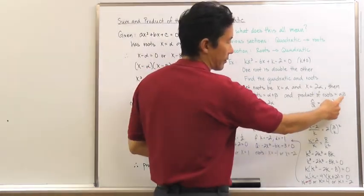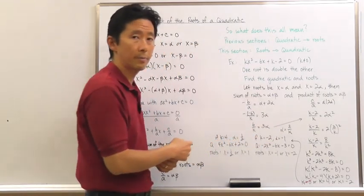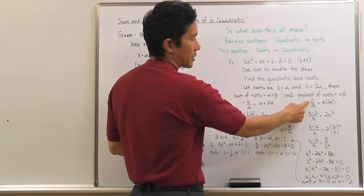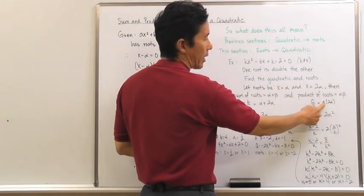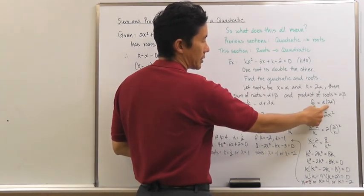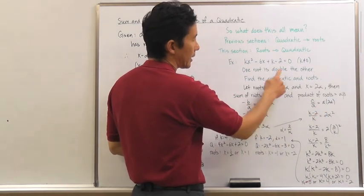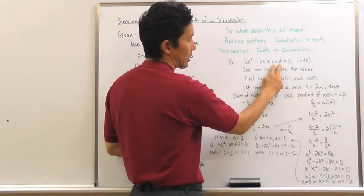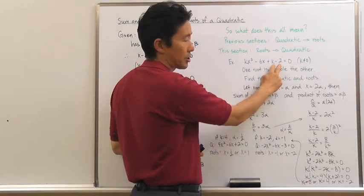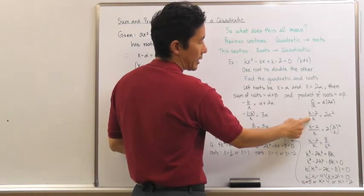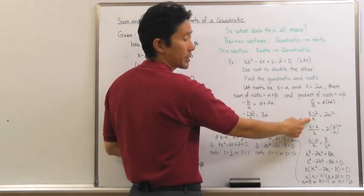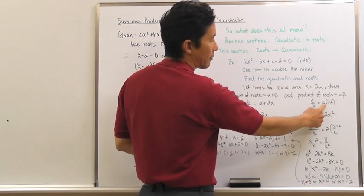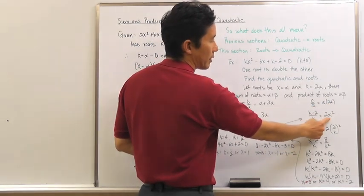Now let's take a look at the product of the roots, which is alpha times beta, and that equals c/a. So c/a is going to be equal to alpha times 2alpha. Now c, the constant term in this quadratic equation, is k − 2, and the coefficient of the quadratic term is again k. So (k − 2)/k = alpha × 2alpha = 2alpha².